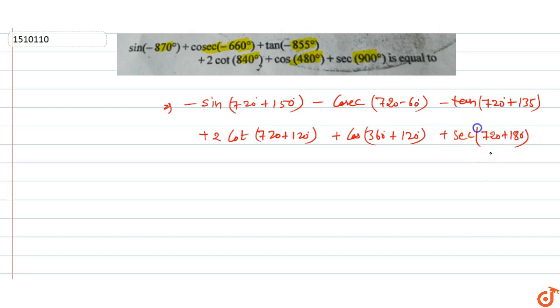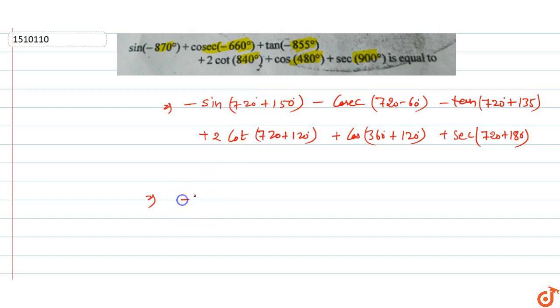Now evaluating: -sin(150°) = -sin(180° - 30°) = -sin(30°) = -1/2.